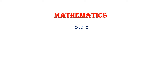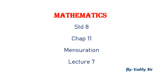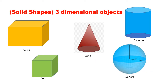Good morning friends. Today we continue with chapter 11, mensuration. In this chapter so far we have studied different three-dimensional objects. We started with two-dimensional objects — the circle, the square, the rectangle — and from there we moved on to three-dimensional solid objects. So we are done with the cuboid and the cube.